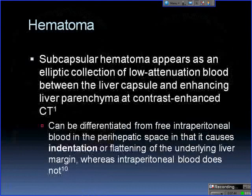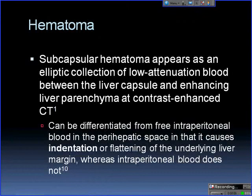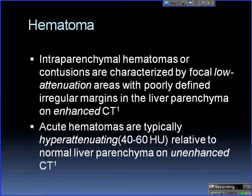Hematoma is the next category. Subcapsular hematoma is an elliptical collection of blood between the liver capsule and the enhancing liver parenchyma. It can be differentiated from free intraperitoneal blood in that it causes indentation or flattening of the underlying liver margin, whereas intraperitoneal blood just follows the contour. Intraparenchymal hematomas, also known as contusions, are characterized by low-attenuation areas with poorly defined irregular margins on enhanced CT. On unenhanced CT they appear hyperattenuated.